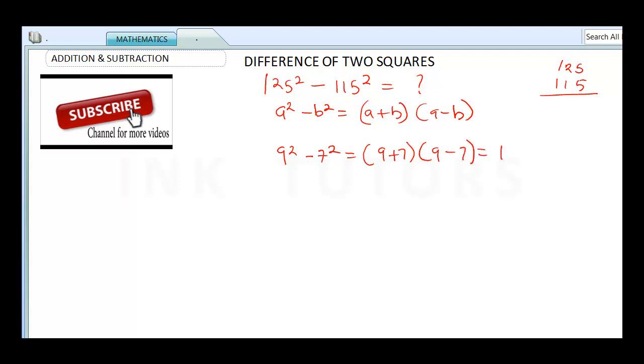9 plus 7 is going to give us 16. 9 minus 7 is going to give us 2. So that means our final answer is 32. If you want to try this to see if it's correct, 9 square is actually 81 minus 7 square is 49. When you do 81 minus 49, it's going to give you,